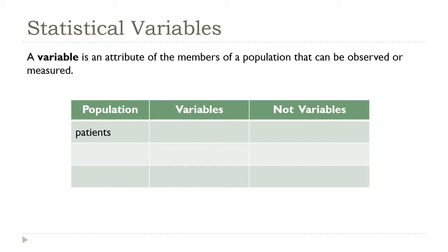Think about patients in a medical office or a hospital — what are some of the variables associated with those patients? There are practically an unlimited number of possibilities, but one example would be heart rate, which is a numeric variable a doctor or nurse could measure. Gender is another possibility — it isn't a numeric variable, but in statistics that's okay, because gender is something we can observe.